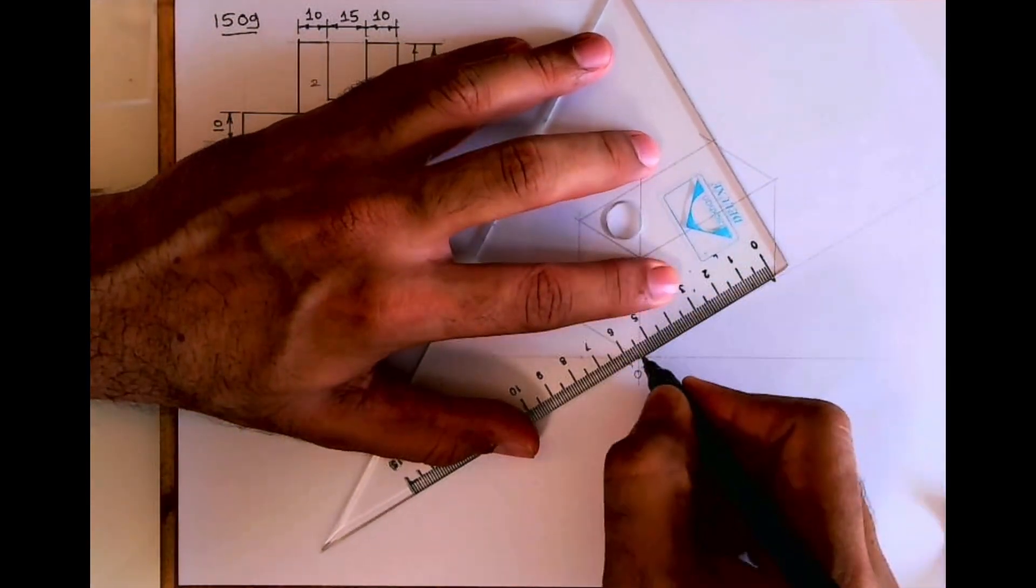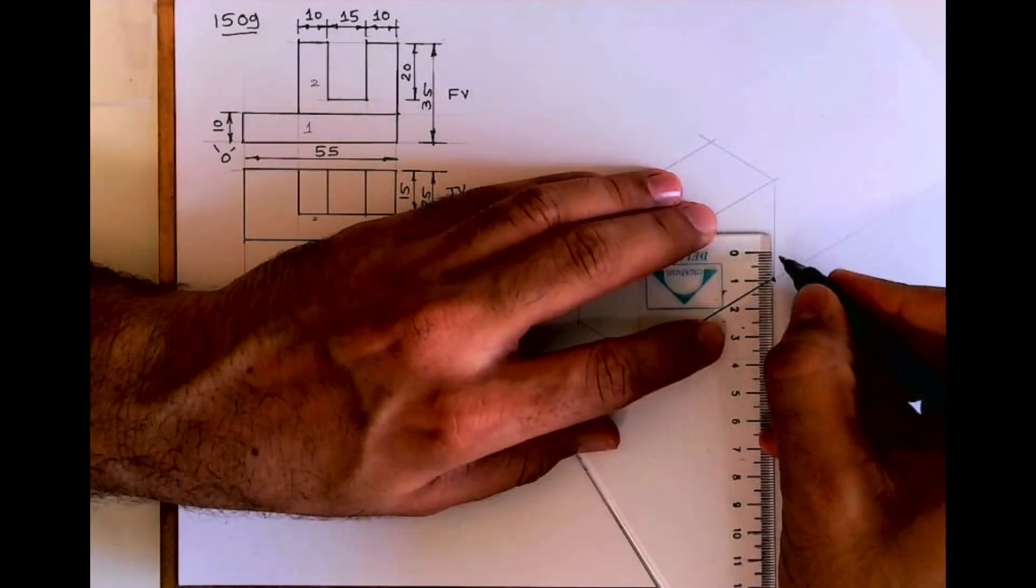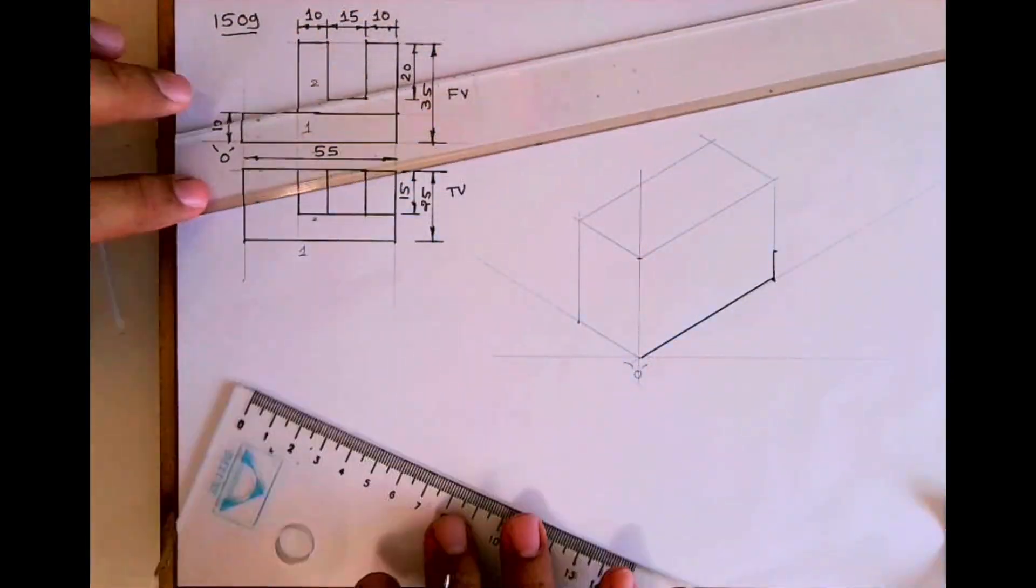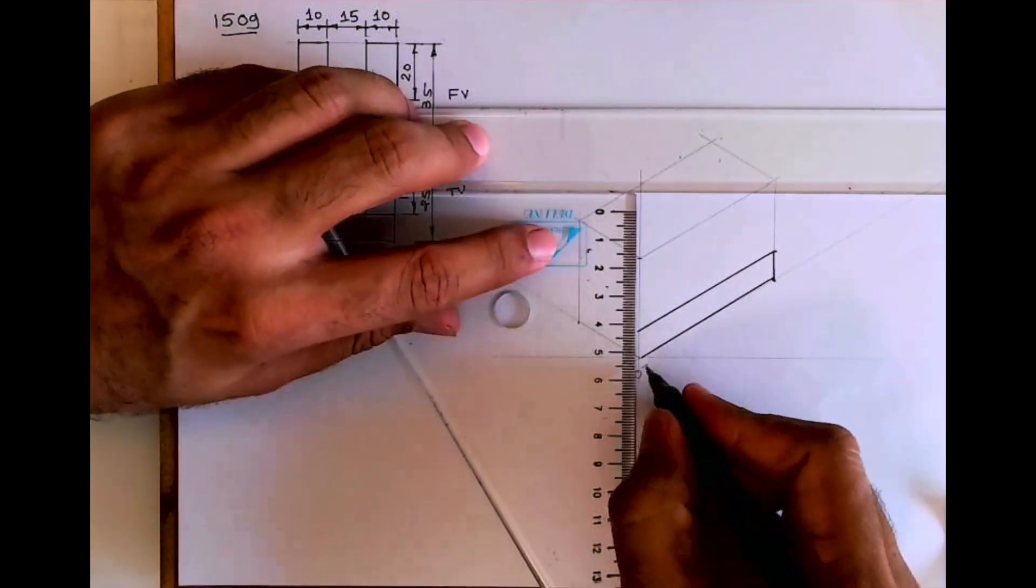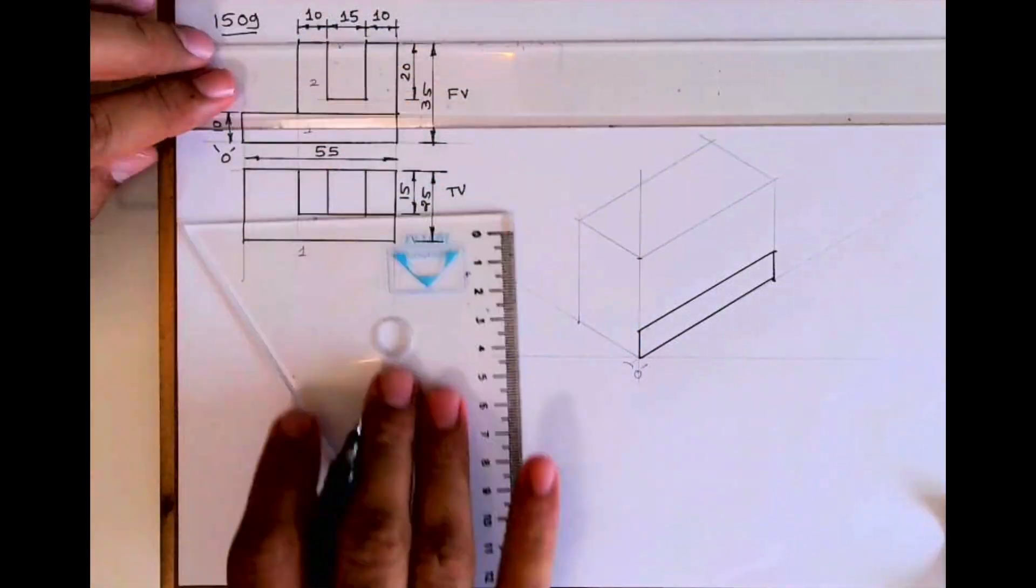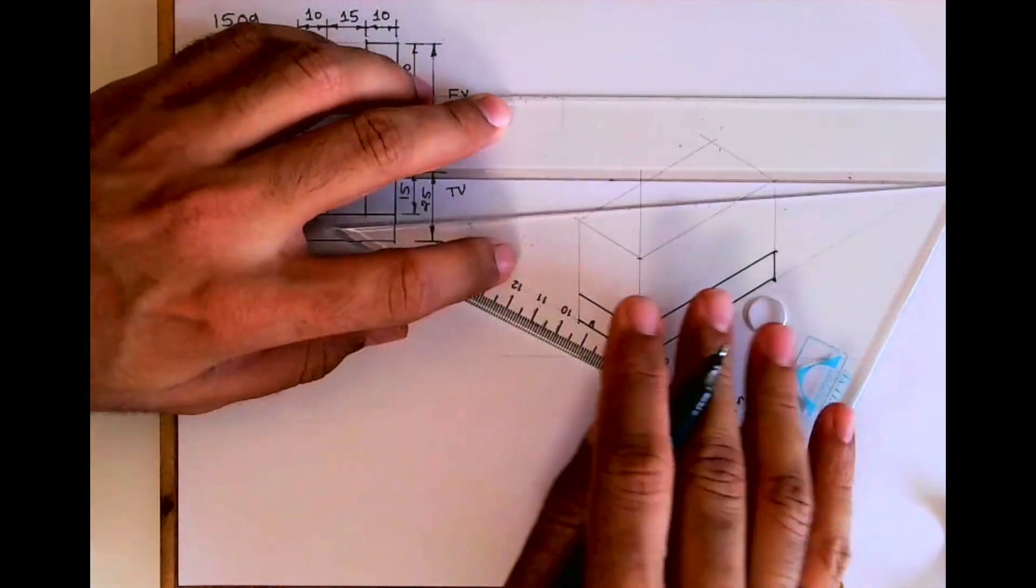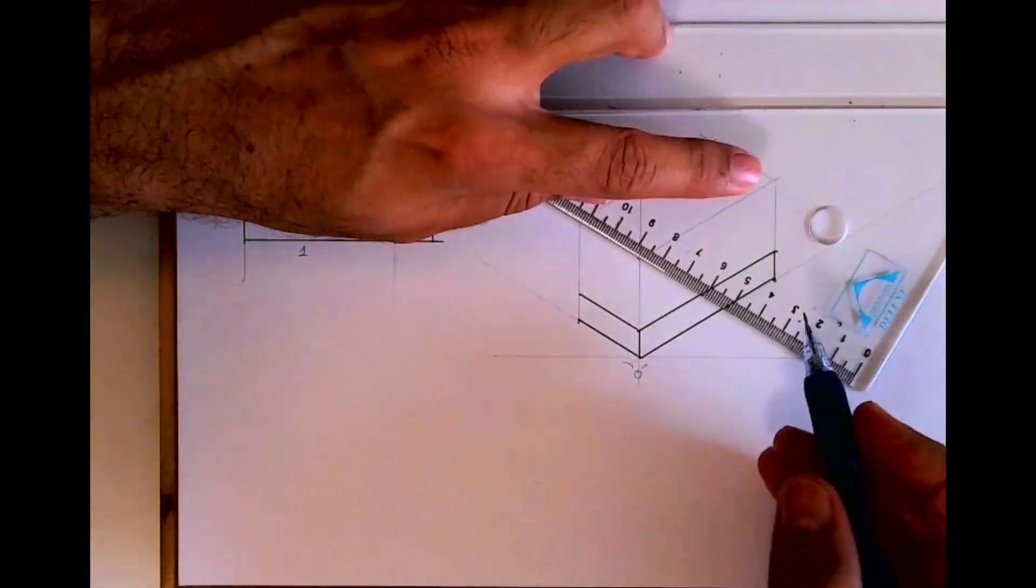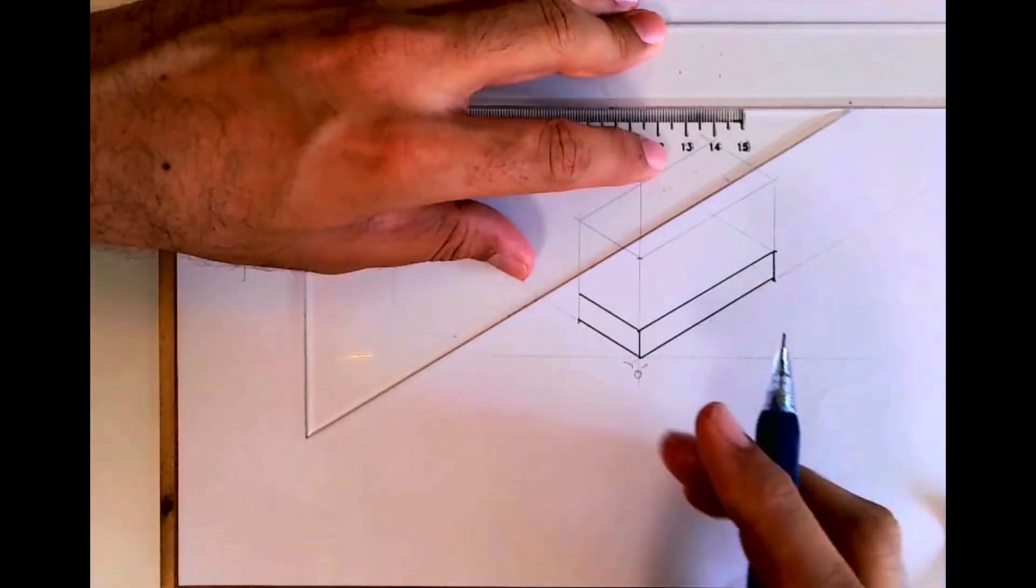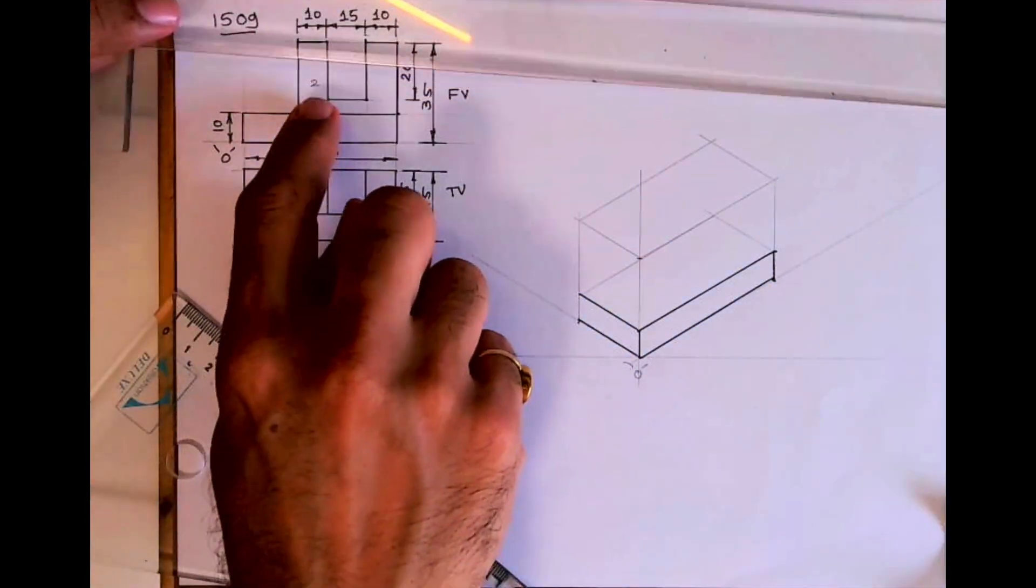So part one is like this, 55 by 10. After that we'll see part two. Now see, this part is behind also, right? So what we will assume, whatever is there in the front, the same thing is behind. According to that we can draw part one like this.